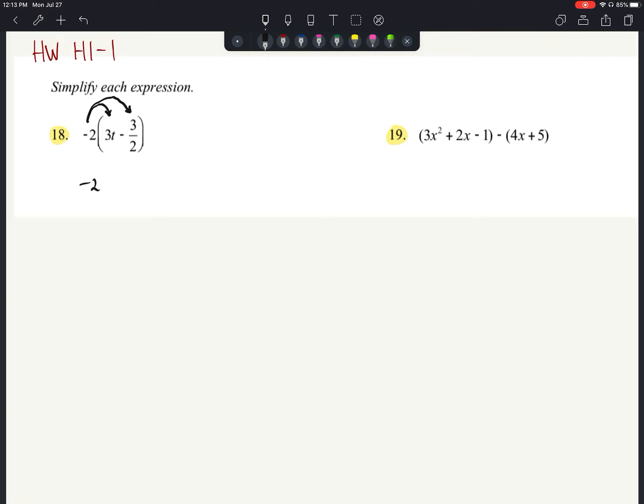If you need to, you can take it and do negative 2 times 3t, and then I have this minus sign right here. Let me color code that. The minus sign, minus, and then I've got a negative 2 times a 3 halves.